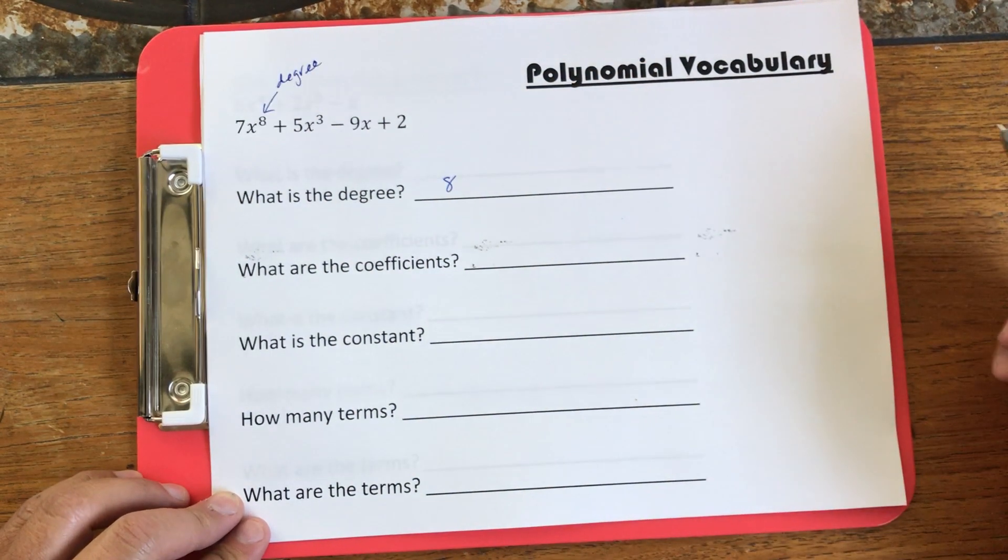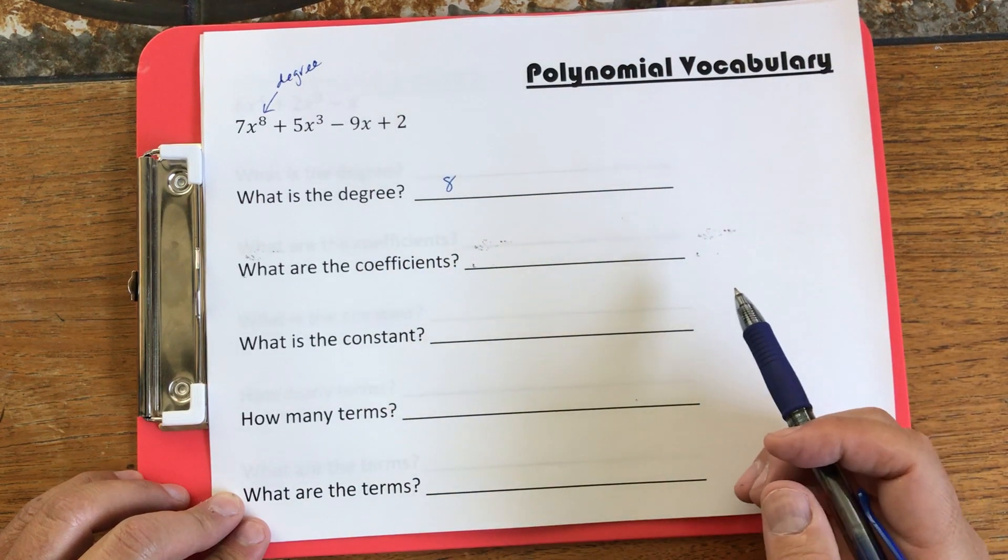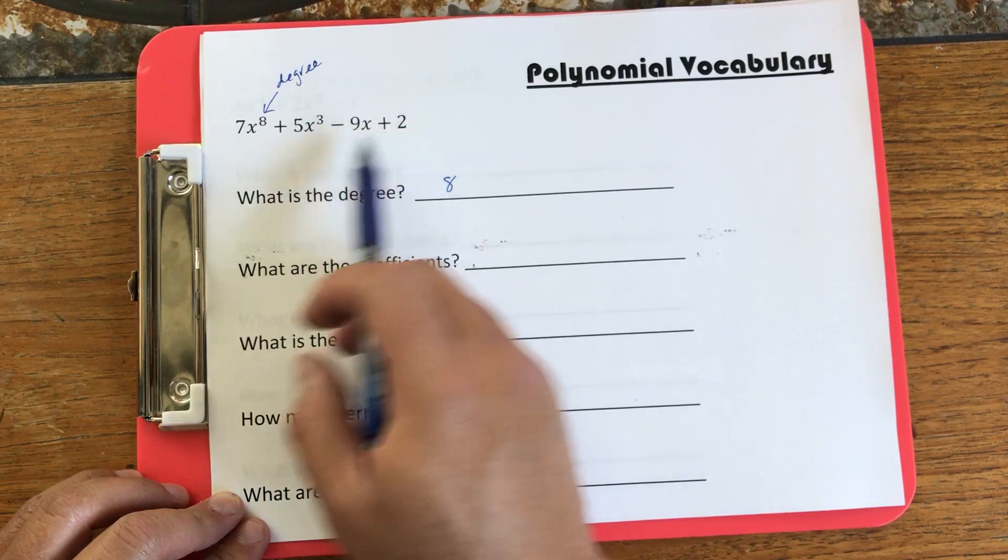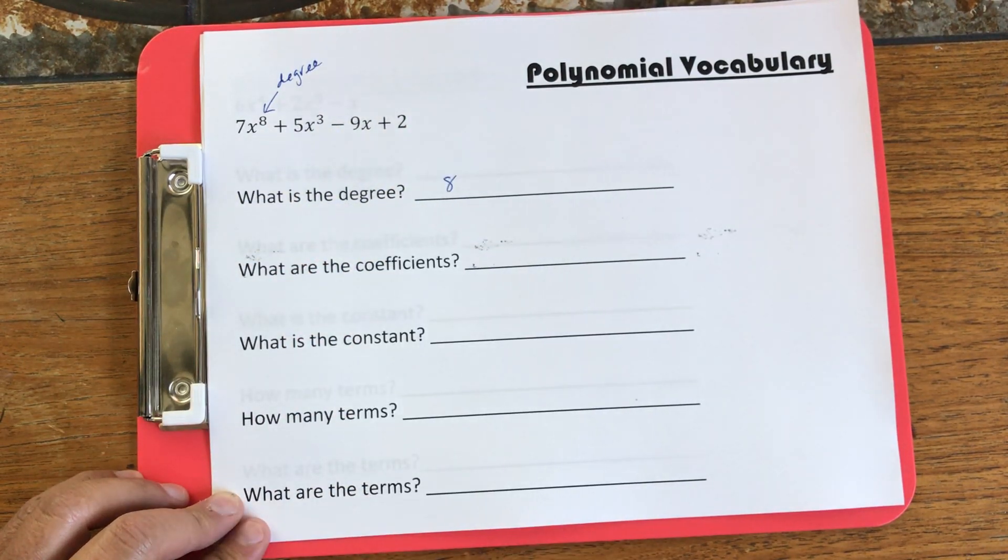Now it's important that whenever you write a polynomial, you always have to write it so the degree of each term goes from large to small. It has to be in sorted order.